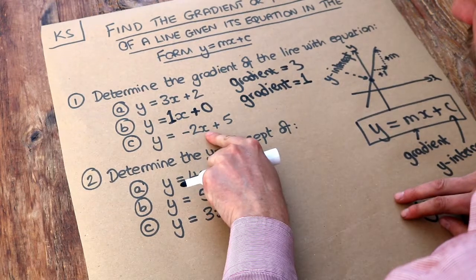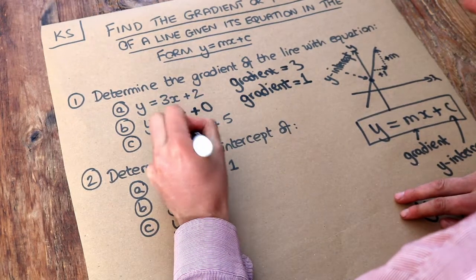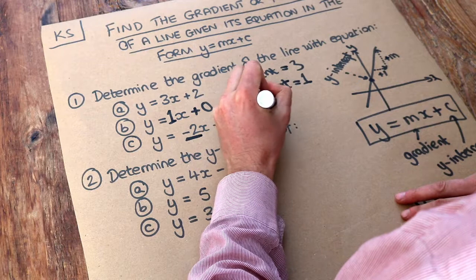And what about here? What's the number in front of x? Well, it's the minus 2. So the gradient here is minus 2.